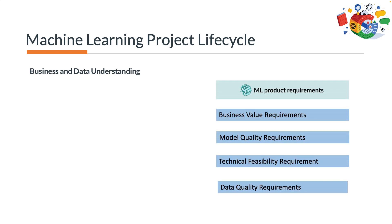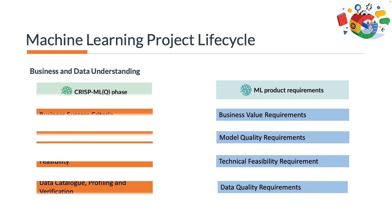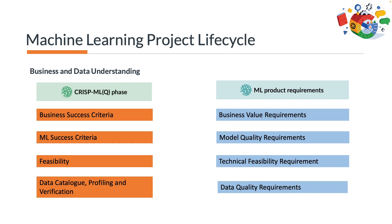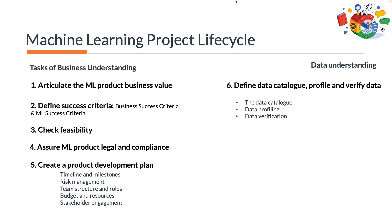We already know these machine learning product requirements. On the left, we see the steps involved in this phase of CRISP-ML(Q), and now we can see how the machine learning product requirements map to each step. The business value requirement maps to business success criteria, model quality requirements maps to machine learning success criteria, technical feasibility requirements maps to feasibility, and data quality requirements maps to data catalog profiling and verification.